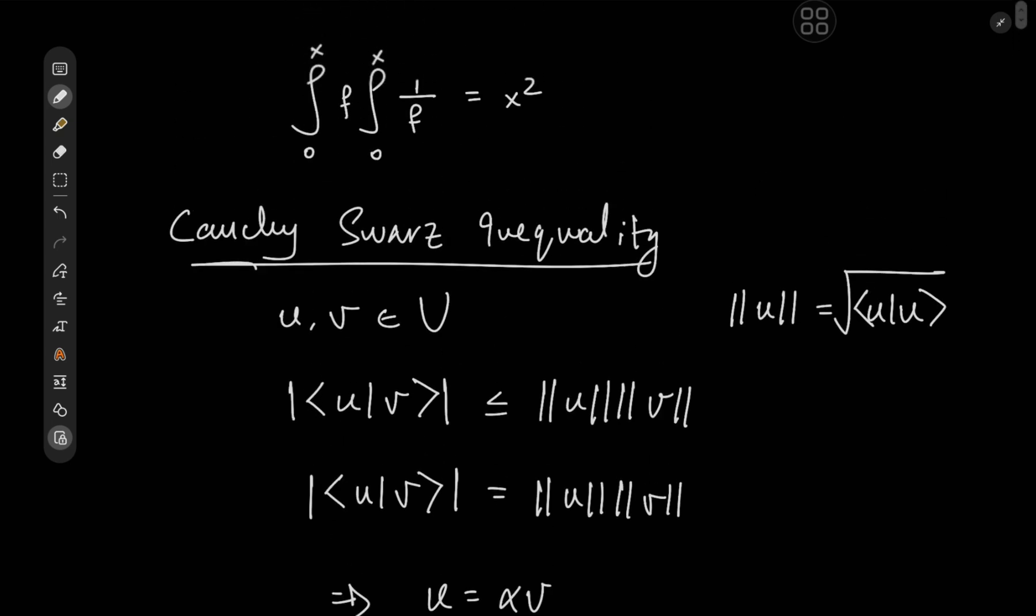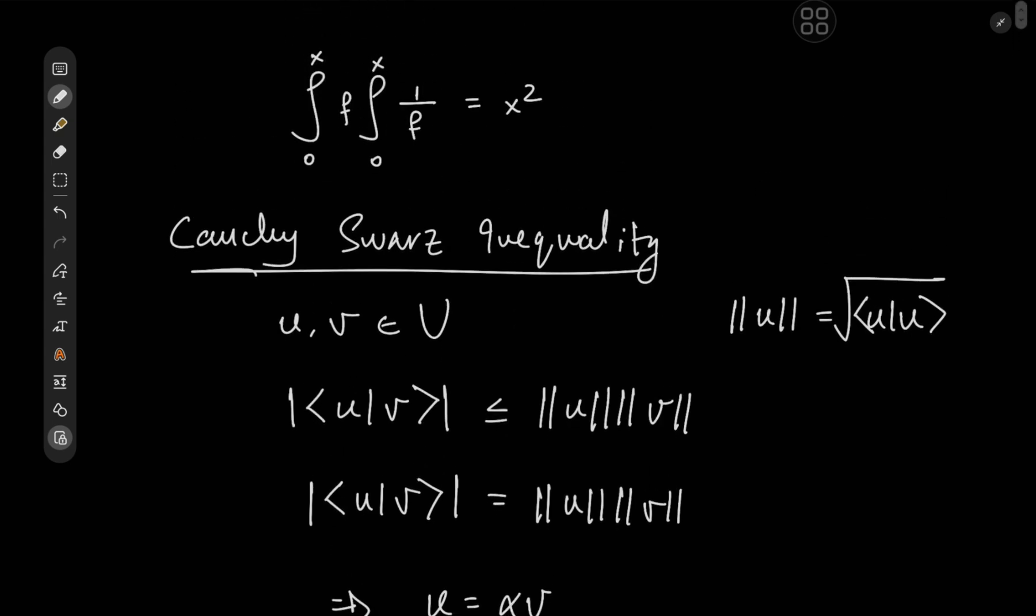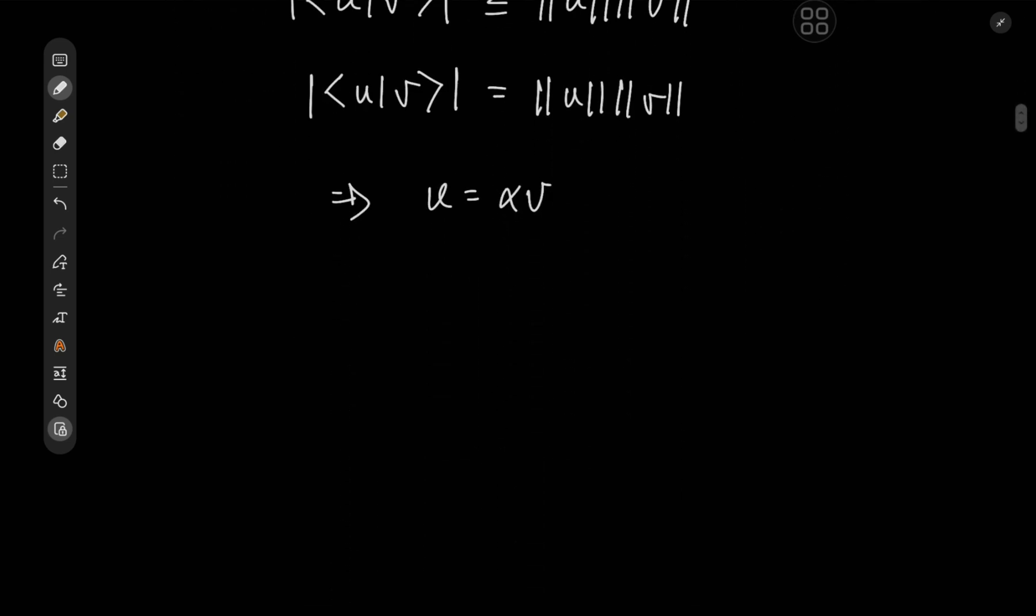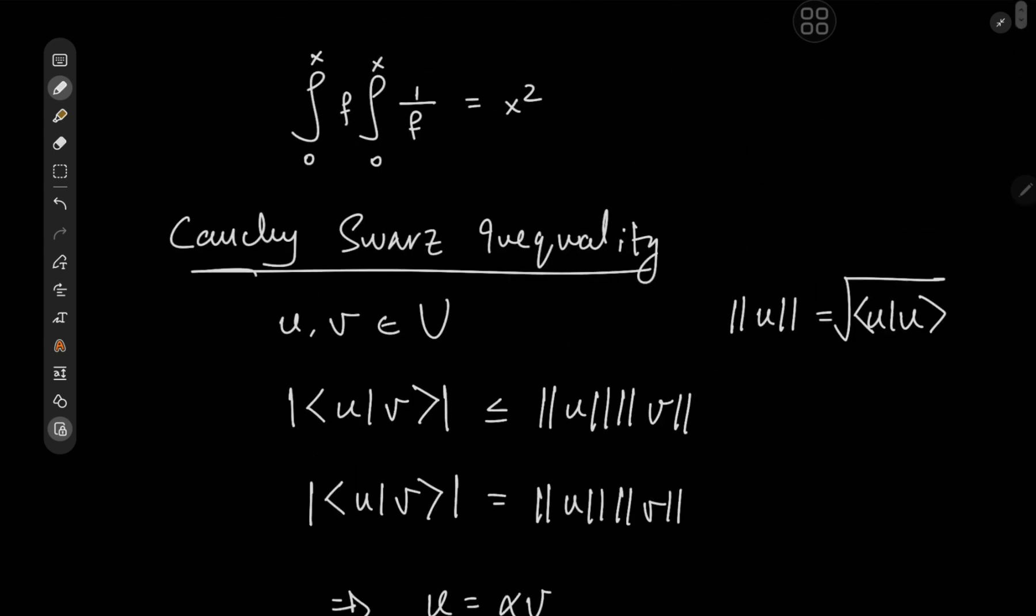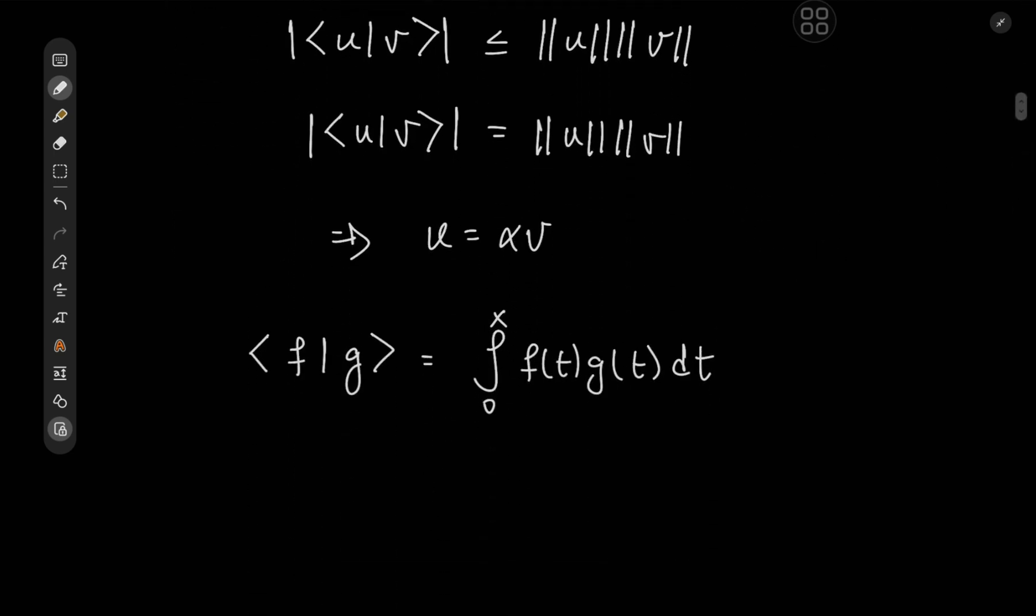But how exactly do we formulate our integral equation in terms of inner products and norms? Well, obviously we need some kind of inner product to work with, and that's exactly what we're about to define. Let's say we have two continuous real valued functions f and g, and we'll define their inner product as the integral from 0 to x of f(t) times g(t) dt.